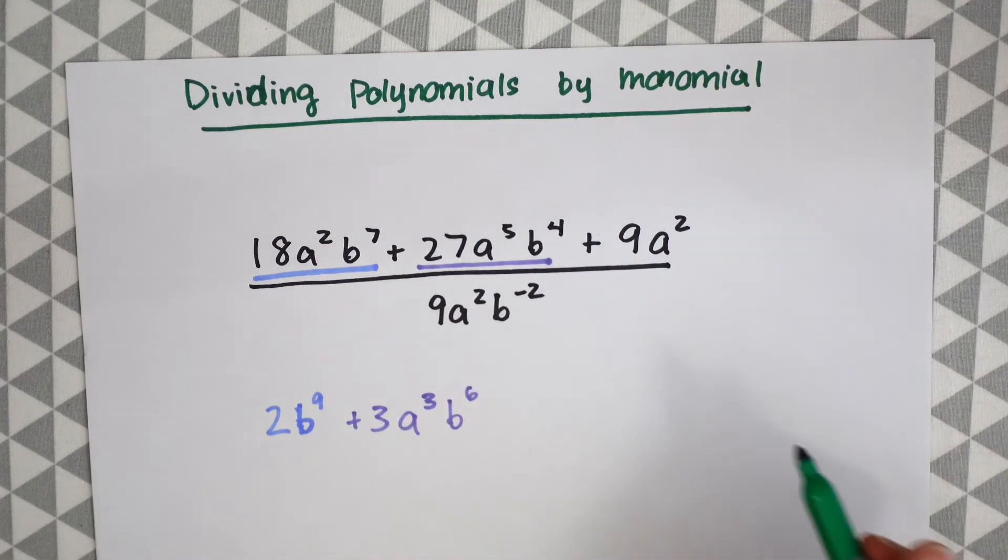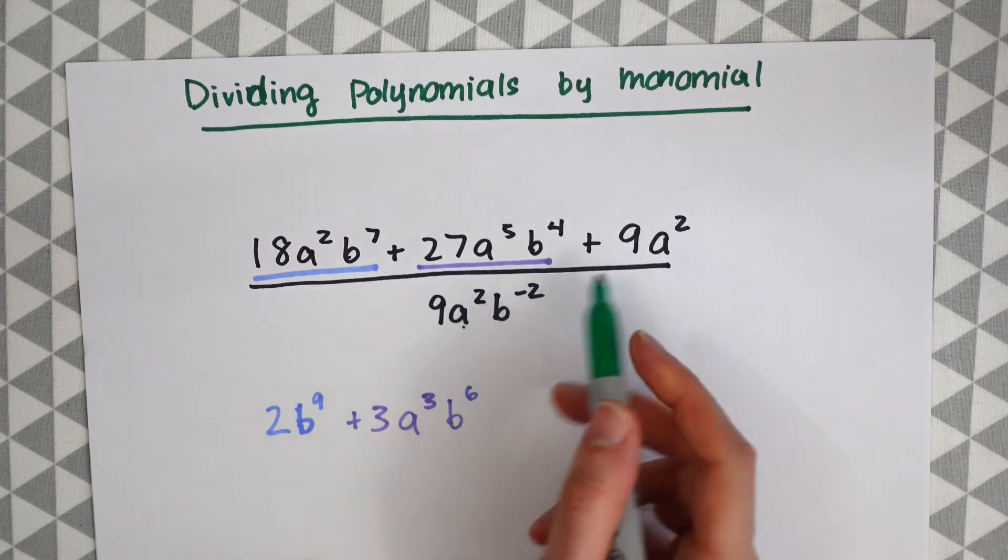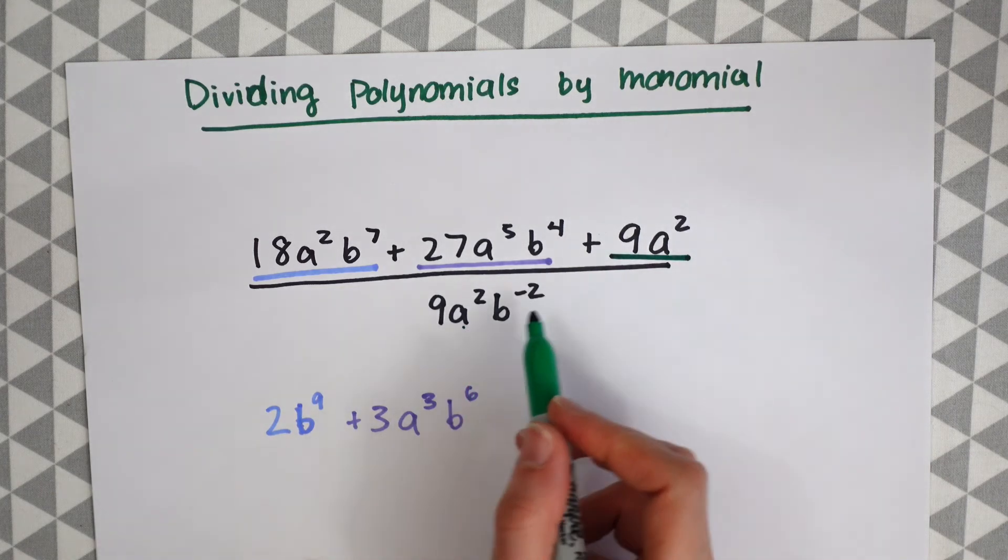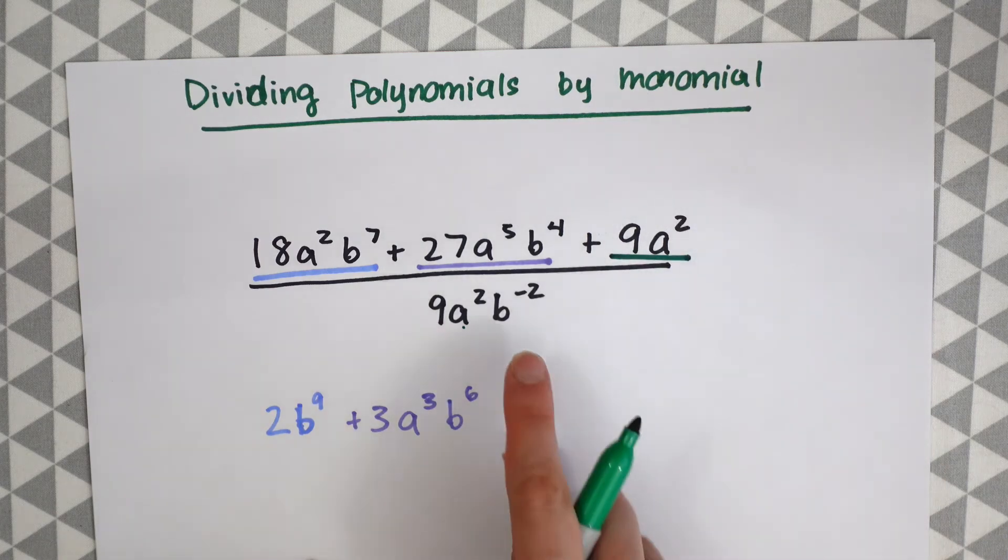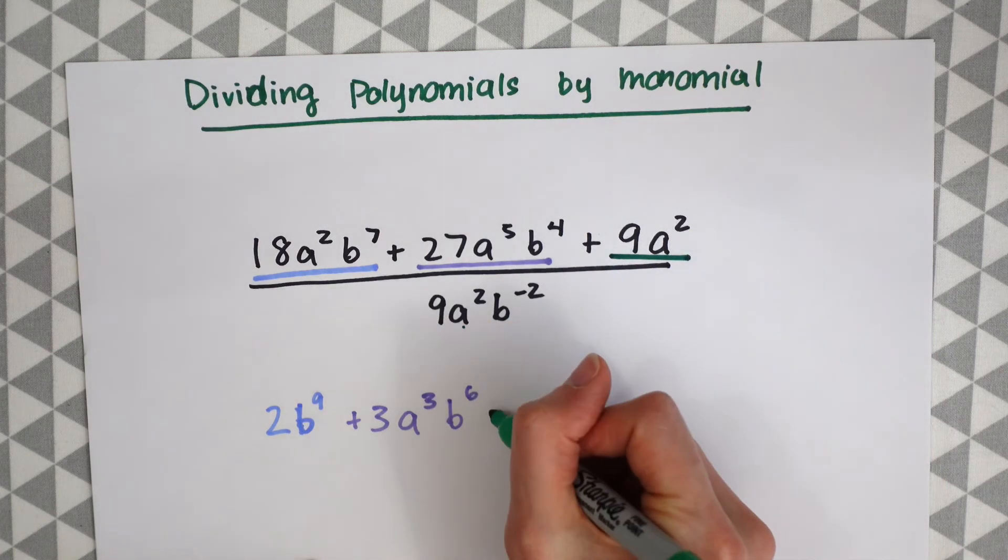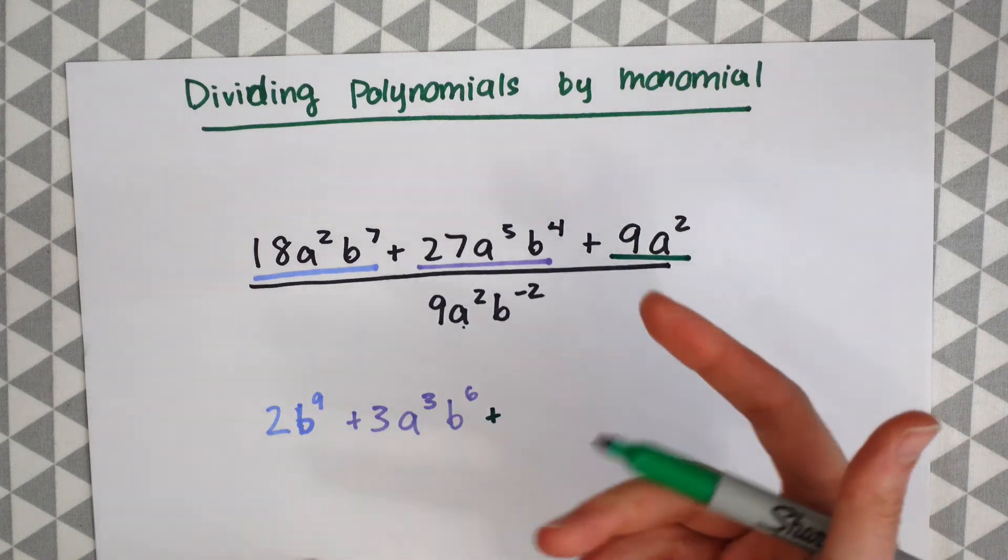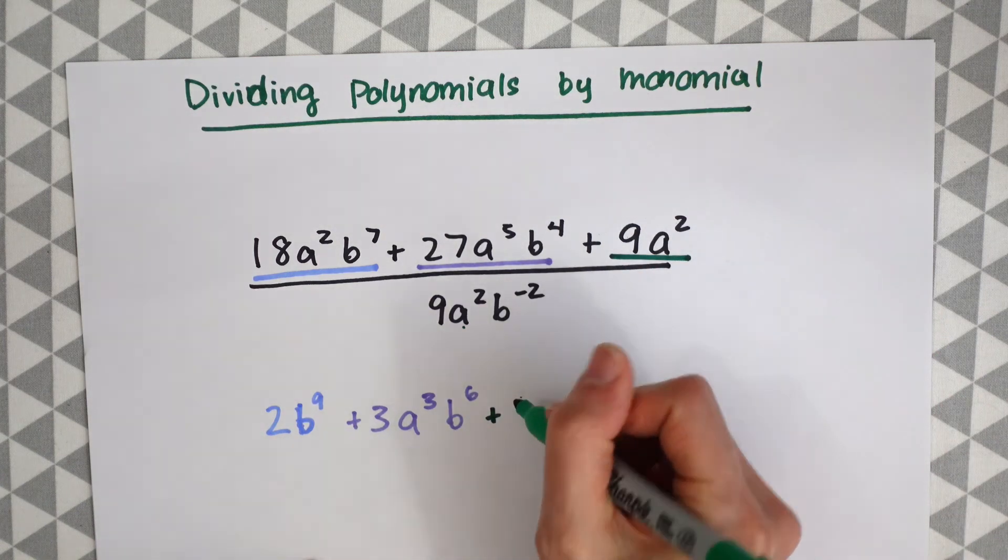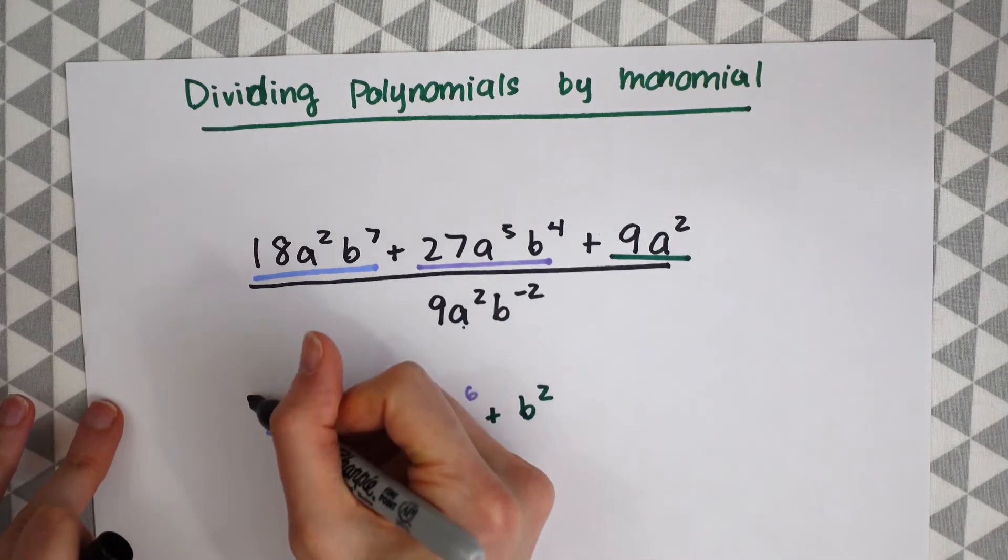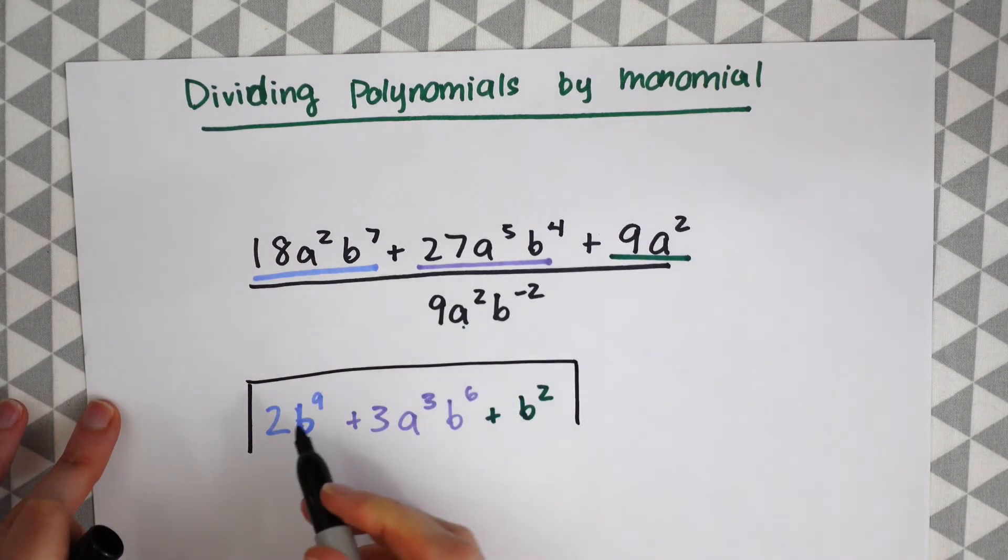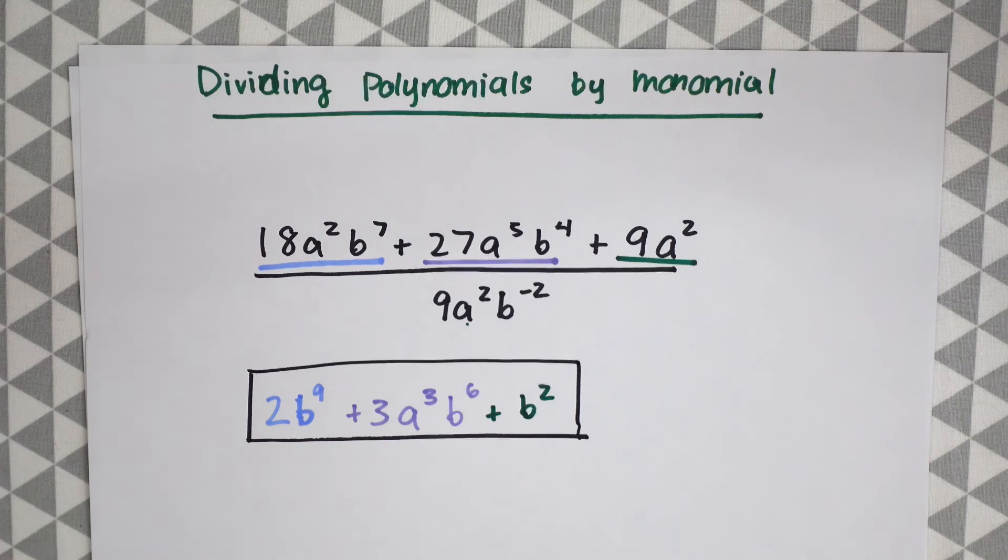We have 9 divided by 9 is just 1. a squared divided by a squared is just 1. And then we still have this b left over. So there's no b over here but we want to make this exponent positive. So to do that we're just going to bring it up above in the numerator and join the rest of these guys right here. So this will become b squared. And that's our answer for dividing polynomials over monomials. We get 2b to the 9th plus 3a cubed b to the 6 plus b squared.